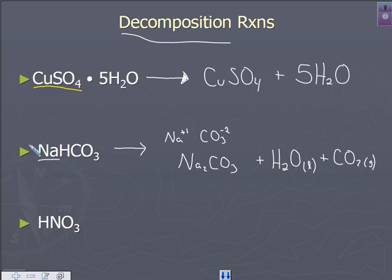So let's put a coefficient of two in front of NaHCO3. You can see we now have two Na's, two H's, two C's, and six O's. And on the right you have two Na's, two H's, two C's, and six O's. Three here, one here, and two here. So you're balanced.